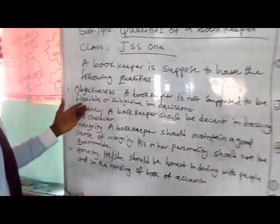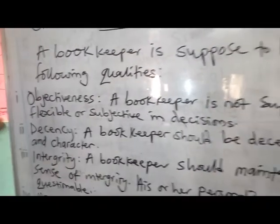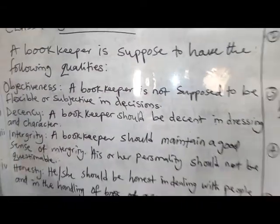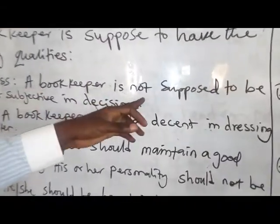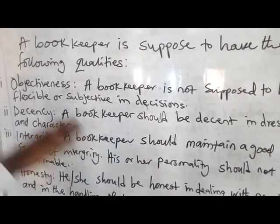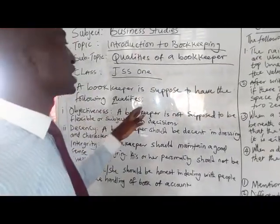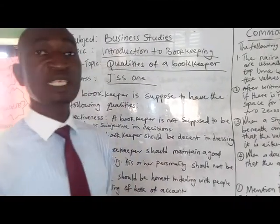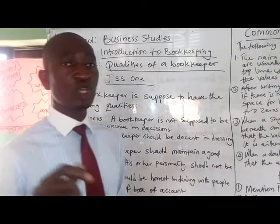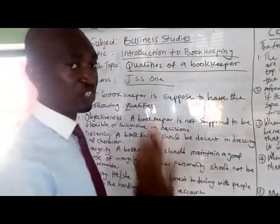Number one: objectiveness. A bookkeeper is not supposed to be flexible or subjective in making decisions. As a good bookkeeper you are supposed to be objective — that is your quality as a bookkeeper. Any decision you take in that business relationship, you are supposed to remain firm, not flexible, in order to keep the business in the right direction.